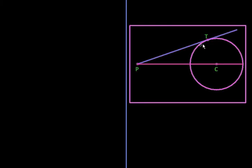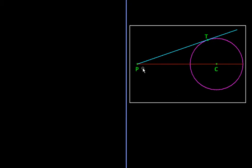So here is a circle given to us and a point P outside of it in its plane. And we have drawn this tangent, which is tangential to the circle at point T.